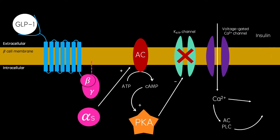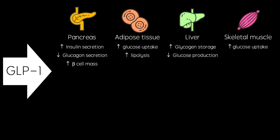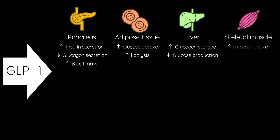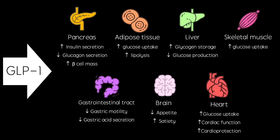However, the effects of GLP-1 don't end there. It also decreases glucagon secretion, which works in antagonism with insulin, as well as increasing beta cell mass. It increases glucose uptake into adipose tissue and skeletal muscle, and increases glycogen storage in the liver. It decreases gastric motility and appetite, both resulting in decreased food intake. And finally, it has been shown to have protective effects on the heart.